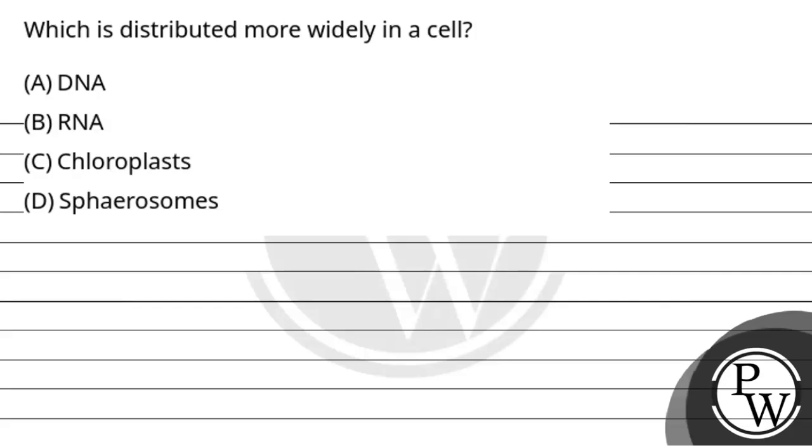Hello guys, let's read the question. The question says which is distributed more widely in a cell? First option is DNA, second option is RNA, third option is chloroplast and fourth option is spherosomes.